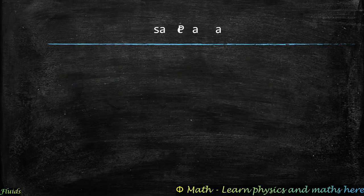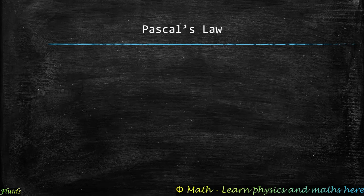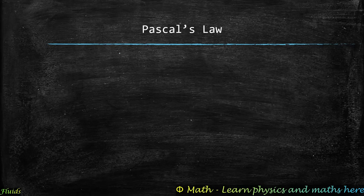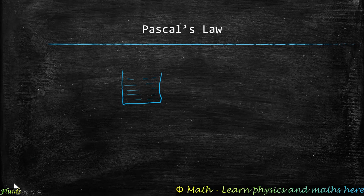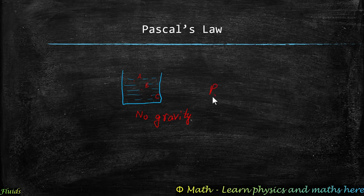With the hydrostatic paradox resolved, we look at Pascal's law: pressure applied to an enclosed incompressible fluid is transmitted undiminished to all points equally in all directions. If there is no gravity acting on the fluid, the pressure at any three points A, B, C at different heights would be equal: P(A) = P(B) = P(C), with no ρgH term needed.